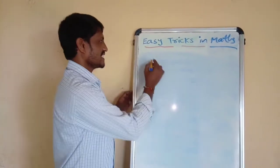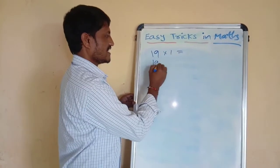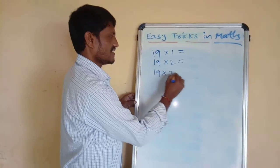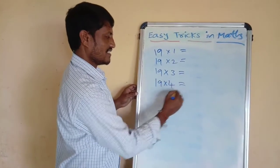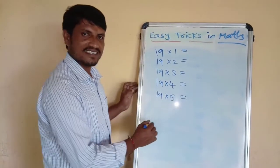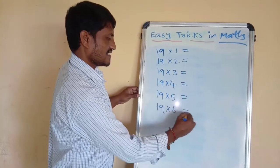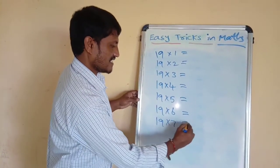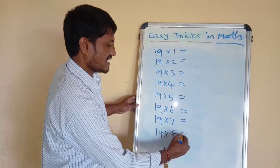19 1s are 19, 19 2s are, 19 3s are, 19 4s are, 19 5s are, 19 6s are, 19 7s are, 19 8s are.